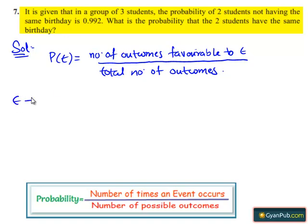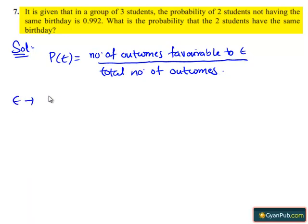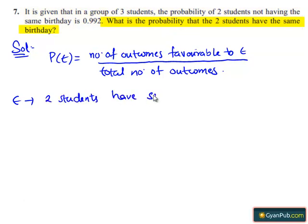Let E be the event that the two students have the same birthday. Then E bar will be the event that two students not have the same birthday.